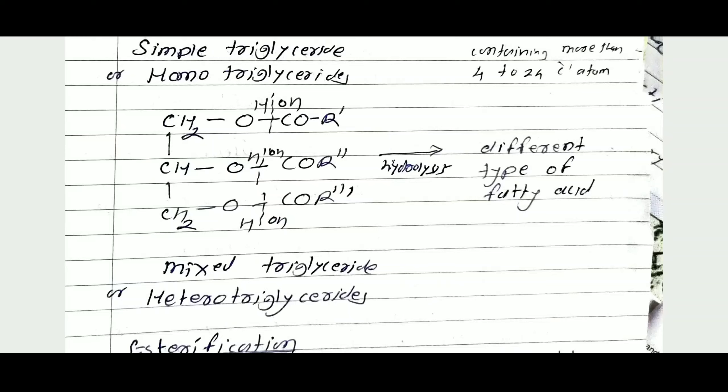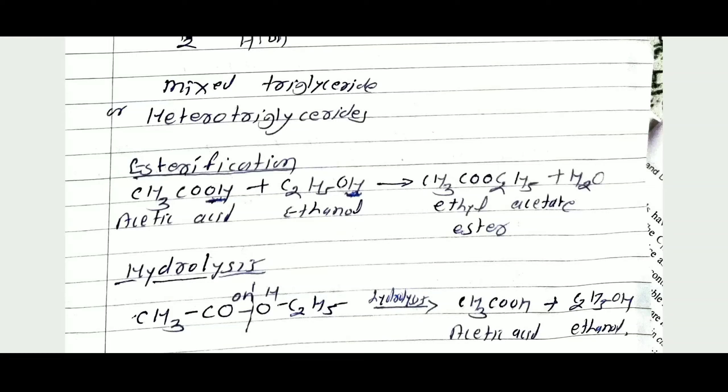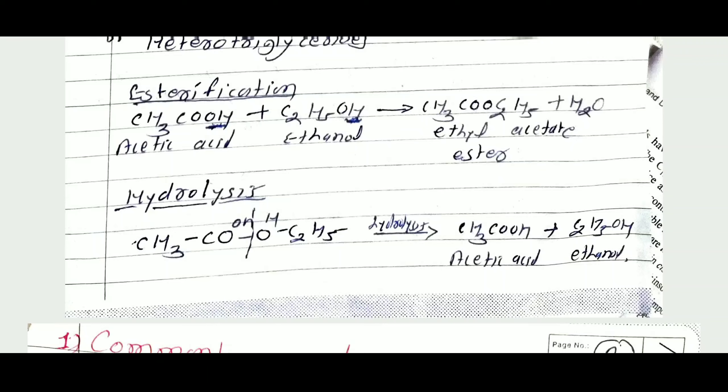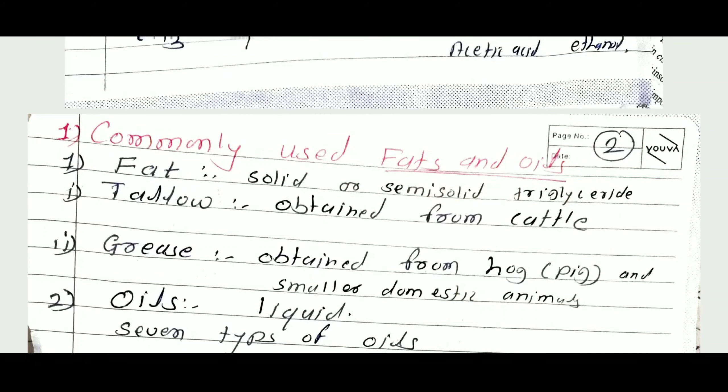These are the two types of triglycerides, which are esters of glycerol. Glycerol reacts with fatty acid to form triester of glycerol. The general reaction is: acid plus alcohol gives ester. For example, acetic acid reacts with ethanol to form ethyl acetate as the ester by releasing a water molecule. The reverse reaction is hydrolysis — ethyl acetate on hydrolysis gives acetic acid plus ethanol. Similarly, triester on hydrolysis giving the same type of fatty acid is homo triglyceride, and different types is hetero triglyceride.